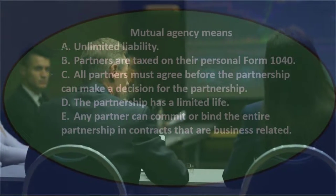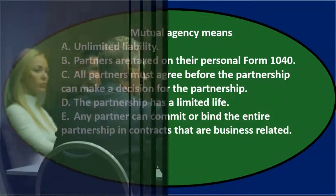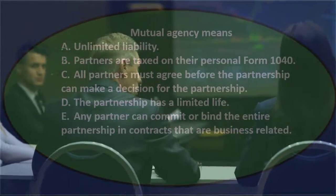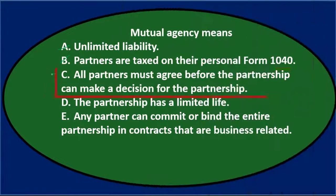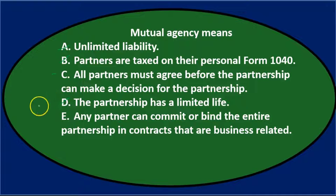C says all partners must agree before the partnership can make a decision — we might think that's true, like a democratic process where every partner votes before a decision is made. I'll keep that for now. D says the partnership has a limited life — true, but nothing to do with mutual agency, so I'll cross that out. E says any partner can commit or bind the entire partnership in contracts that are business related — that sounds good, so I'll leave C and E.